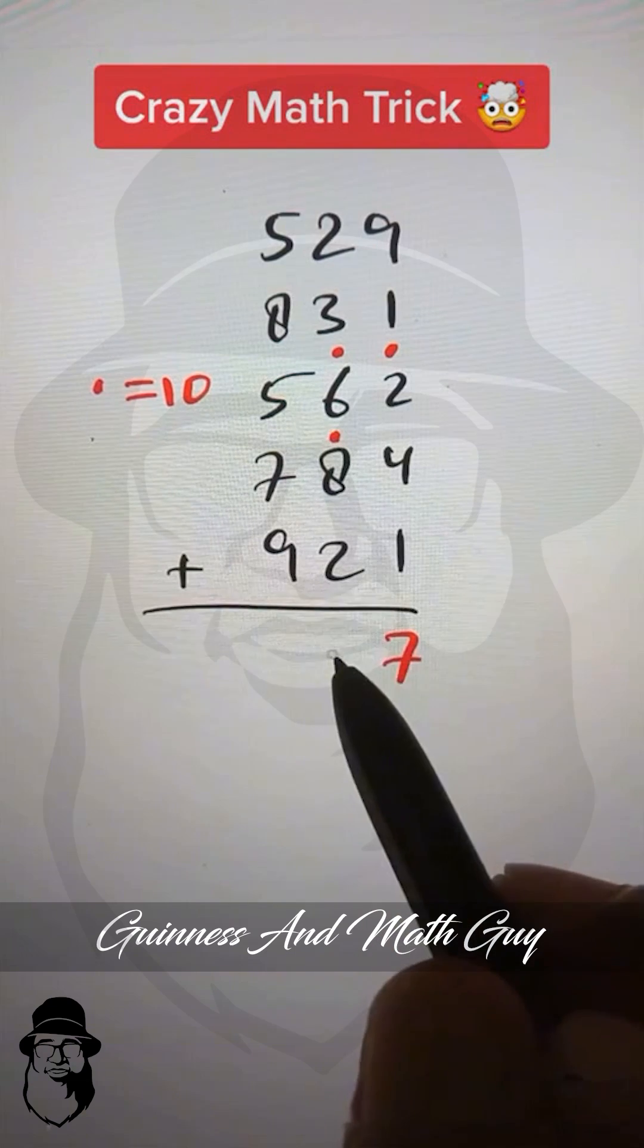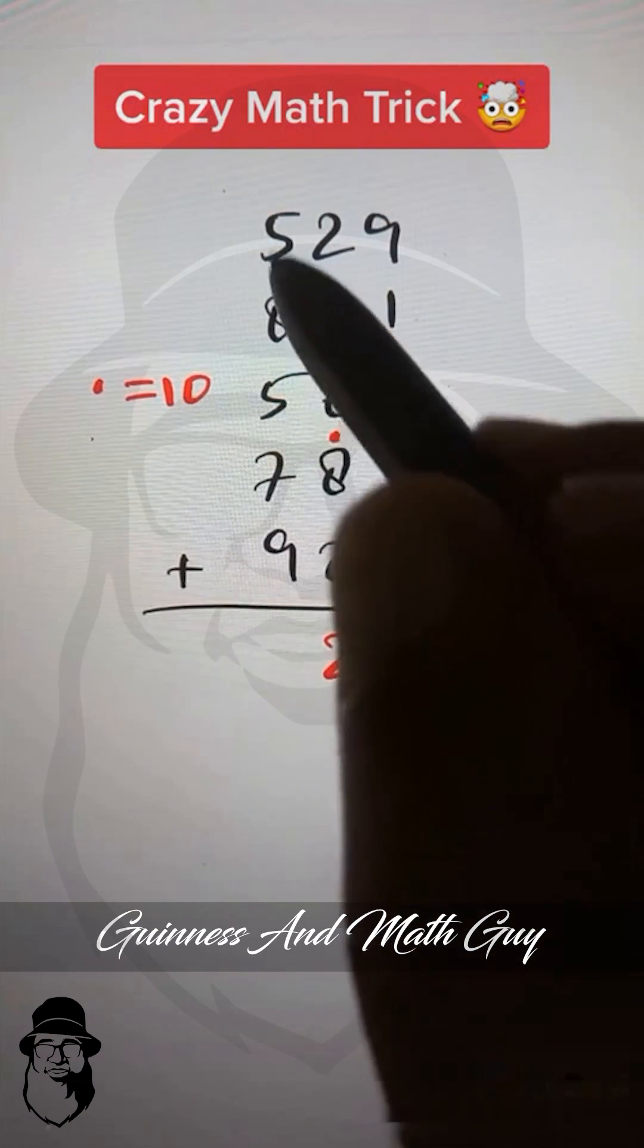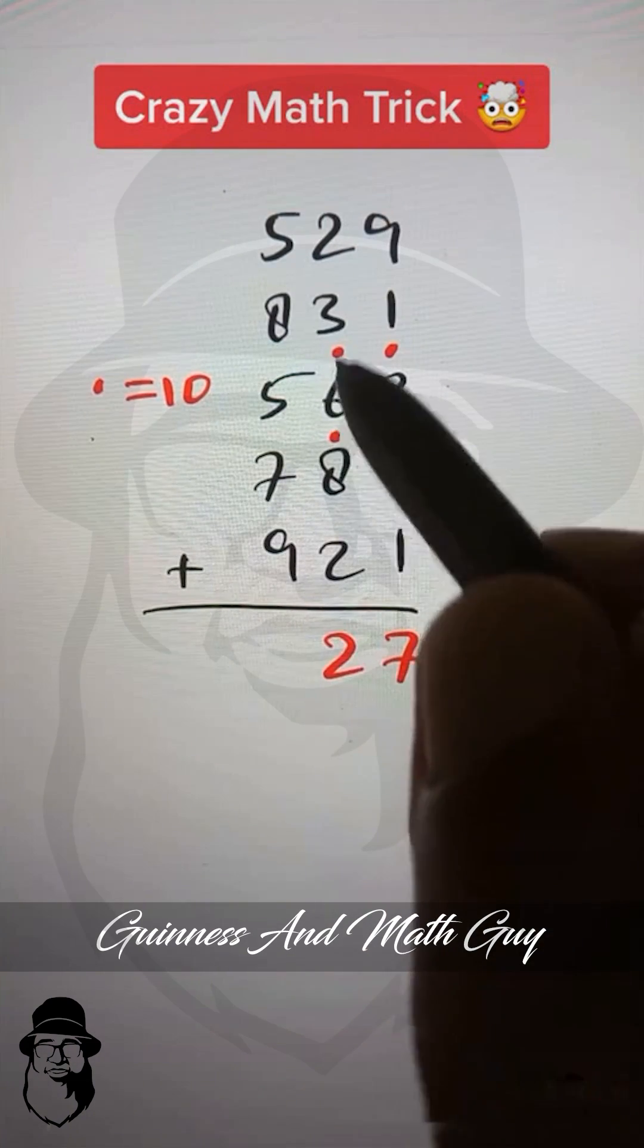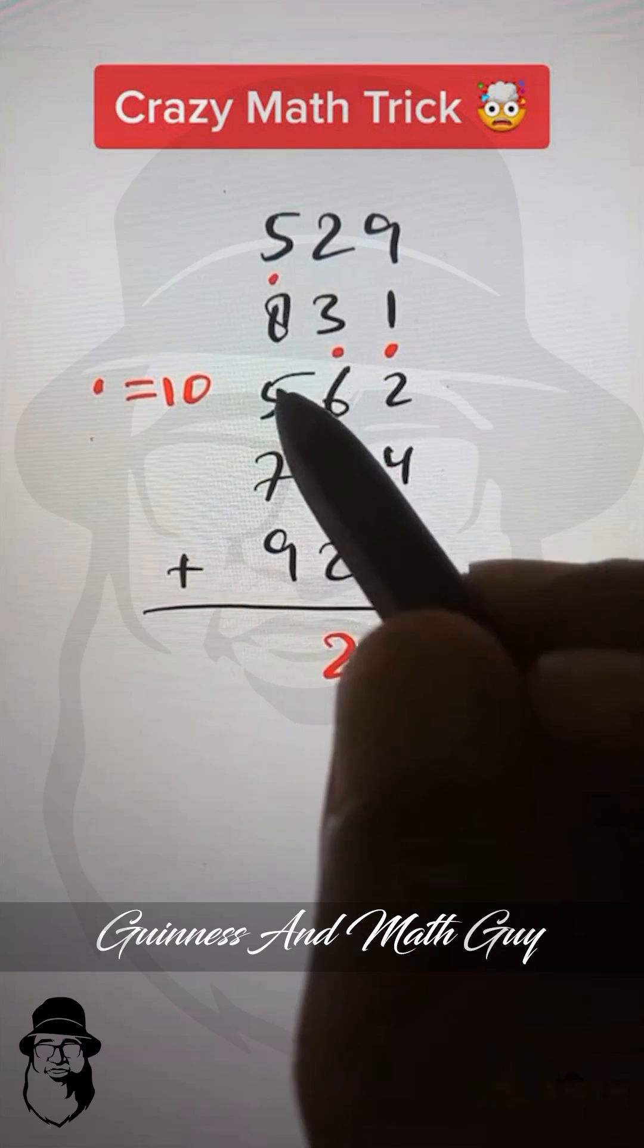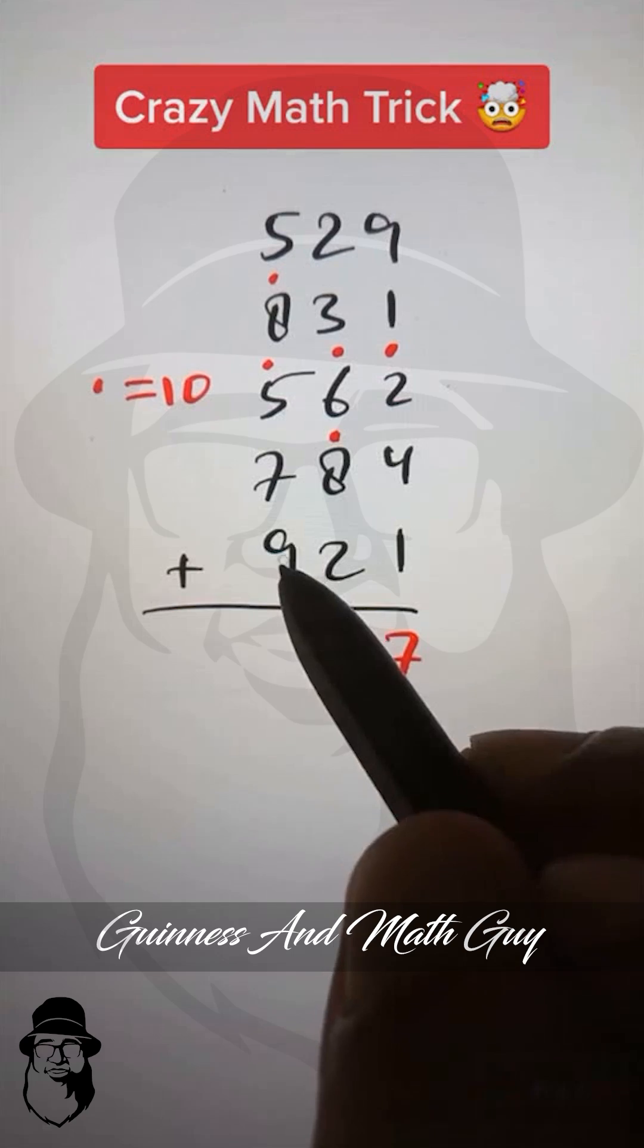...is dot and we have 2 here. We write 2. Now next column, we see we have 2 dots. 2 plus 5 is 7, 7 plus 8 is dot 5. 5 plus 5 is dot. Then we have 7, 7...